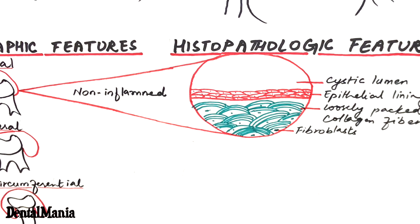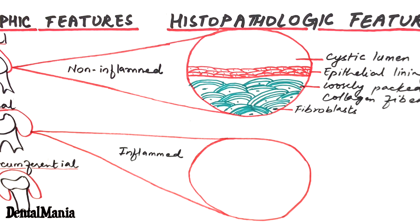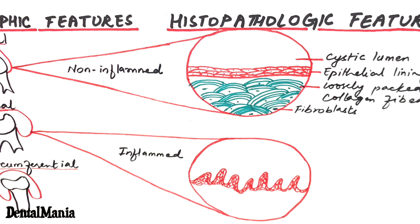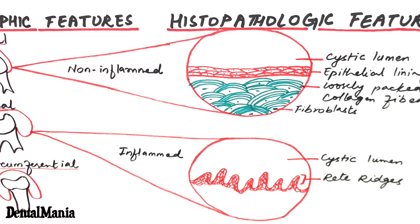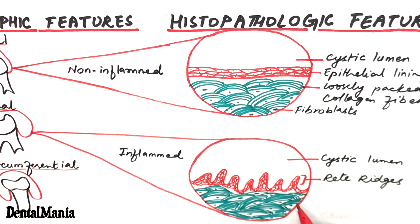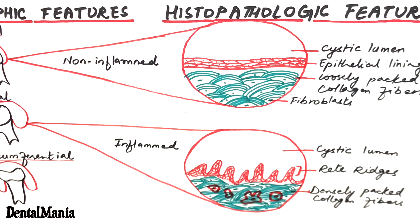In the inflamed type of dentigerous cyst, seen mostly in the lateral variant, the epithelial lining shows varying amounts of hyperplasia with the development of rete ridges, which are finger-like epithelial projections. The fibrous wall has densely packed collagen fibers with variable infiltration of chronic inflammatory cells.